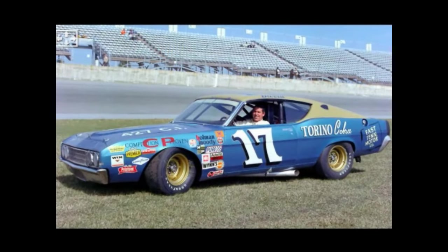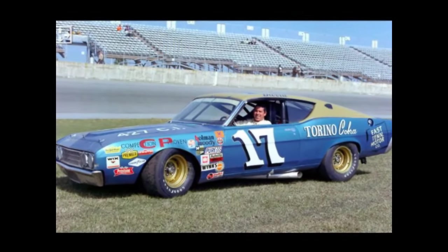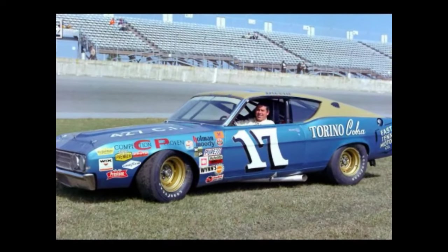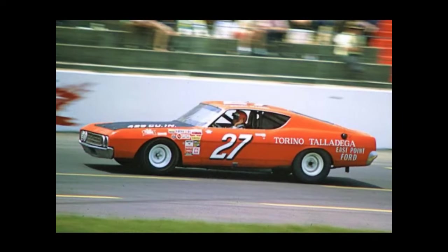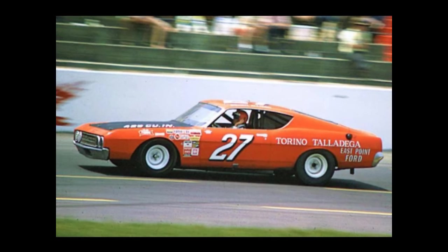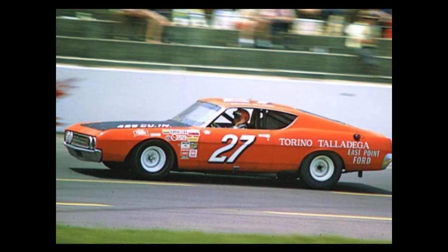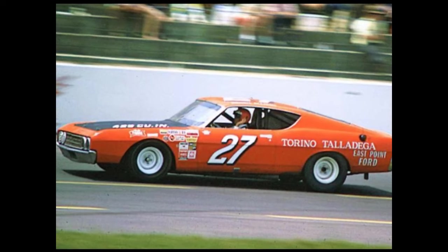To make the car more aerodynamic at high speeds, a sleeker front section was added. The Torino Talladega replaced the factory stock nose with one that extended the car's length by about 6 inches, with a flush-mounted grille on a more aerodynamic front end.